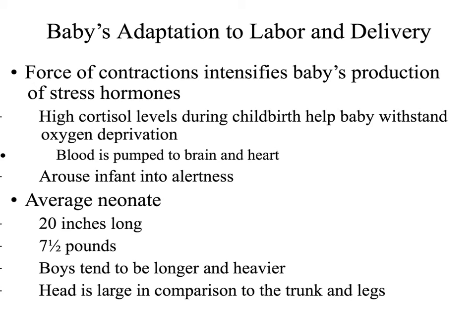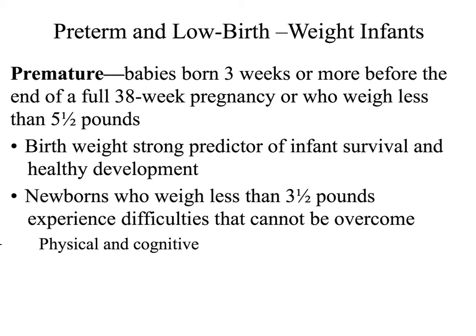It is also important to note that the average newborn — what we call the neonate — is about 20 inches long and seven and a half pounds in the United States, though boys tend to be a little longer and heavier than girls. In all babies, the head is often larger in comparison to the trunk and legs. Preterm is not the same as premature. Premature means before reaching full maturation — babies born three weeks or more before the end of a full 38-week pregnancy, or those who weigh less than five and a half pounds. Birth weight is a strong predictor of survival. Anyone born weighing less than three and a half pounds is likely to experience difficulties — physical, cognitive, and in intelligence capacity — that may never be fully overcome.